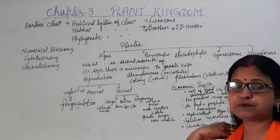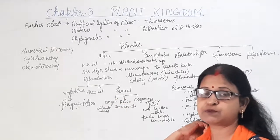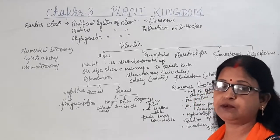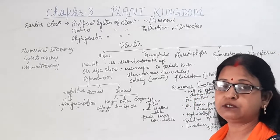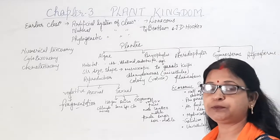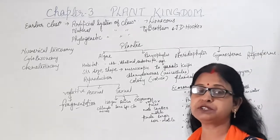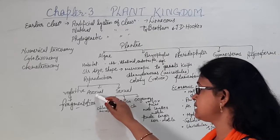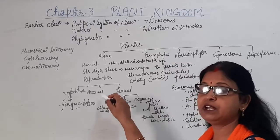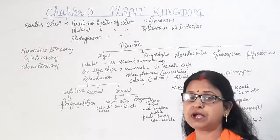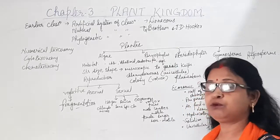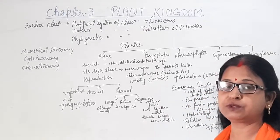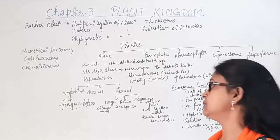Asexual reproduction occurs through specialized spores like zoospores, which are motile structures having flagella. The zoospores undergo germination, which leads to a new algal plant. Only one parent is required, no gamete formation takes place, and it occurs only through the specialized spore structure.